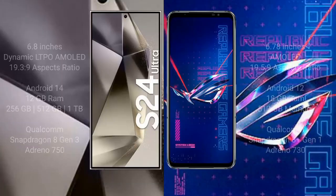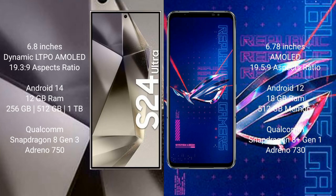Samsung Galaxy S24 Ultra comes with a 6.8-inch Dynamic LTPO AMOLED display. Asus ROG Phone 6 Pro comes with a 6.78-inch AMOLED display. Samsung Galaxy S24 Ultra runs on Android 14, while Asus ROG Phone 6 Pro runs on Android 12.